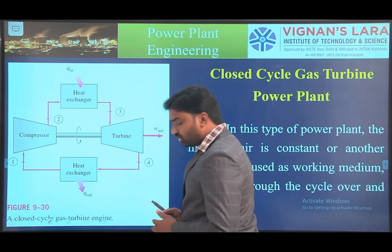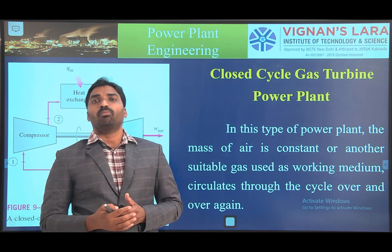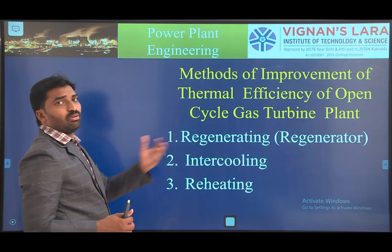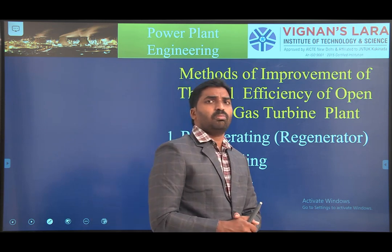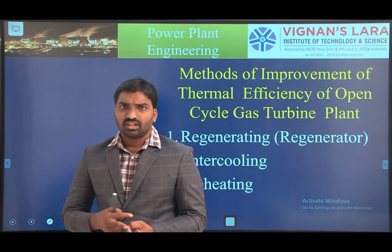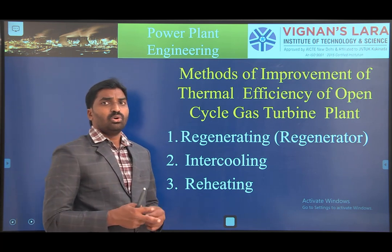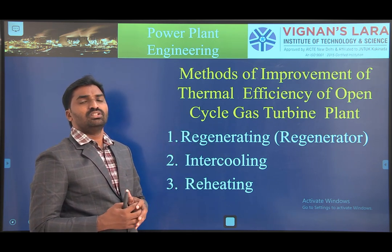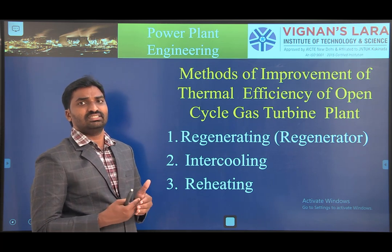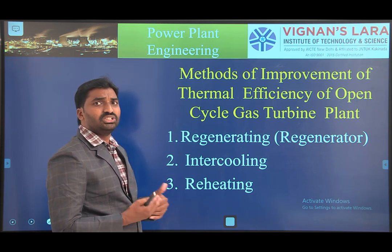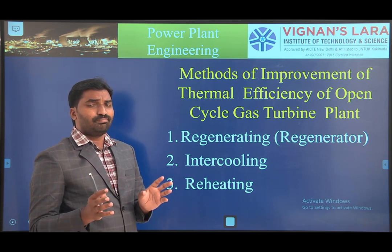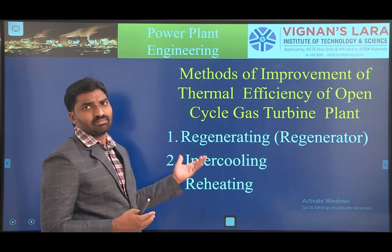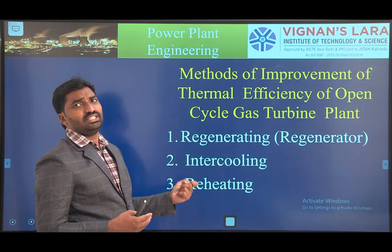Now we would like to discuss improving the efficiency of a gas turbine power plant. In an open cycle gas turbine power plant using a compressor, turbine, and combustion chamber, most of the work is consumed by the compressor. The compressor is a work-requiring device, while the turbine is a work-producing device. Most of the energy derived by the gas turbine is used for running the compressor.